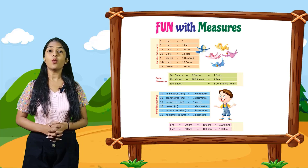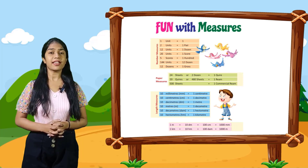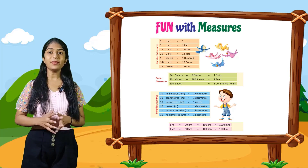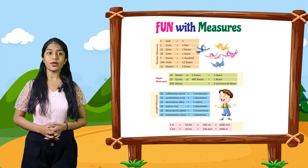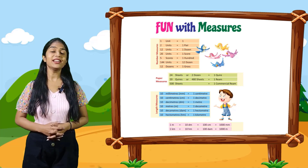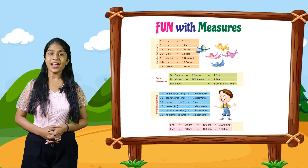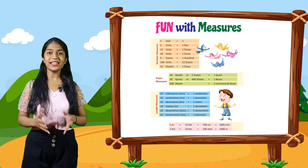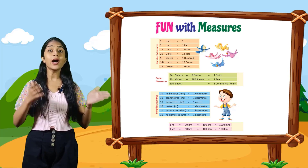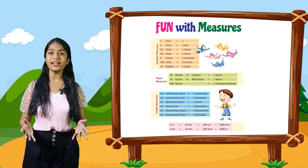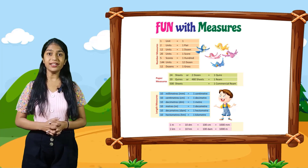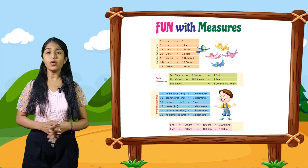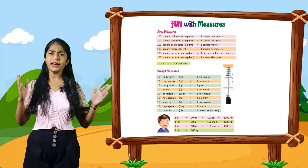So now let's do length measures. 10 millimeters is equal to 1 centimeter. 10 centimeters is equal to 1 decimeter. 10 decimeters is equal to 1 meter. 10 meters is equal to 1 decameter. 10 decameters is equal to 1 hectometer. 10 hectometers is equal to 1 kilometer. 1 meter is equal to 10 decimeters, 100 centimeters, and 1000 millimeters. 1 kilometer is equal to 100 hectometers, 100 decameters, and 1000 meters.